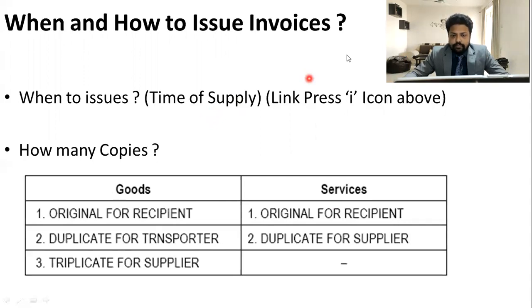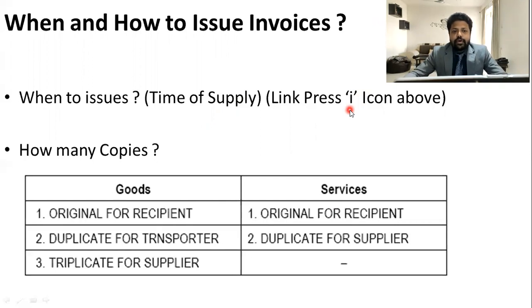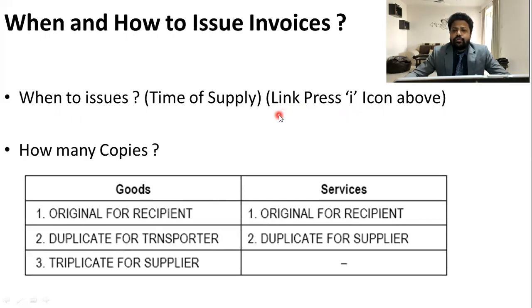I am giving the link here — pressing that icon will take you to that session. A quick recap: in the time of supply session, we discussed invoicing for goods and services. For goods, there were two categories: goods which require movement — invoice must be issued before or at the time movement starts for delivery; and goods which do not require movement — when goods are made physically available to the recipient. For services, the invoice must be issued within 30 days from the provision of service in normal cases, and within 45 days for banking or financial institutes.